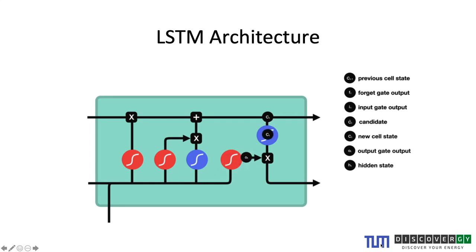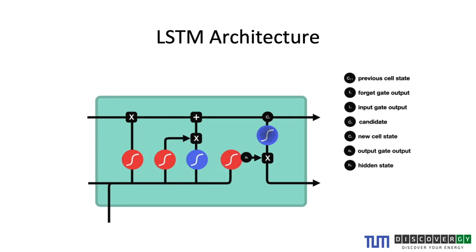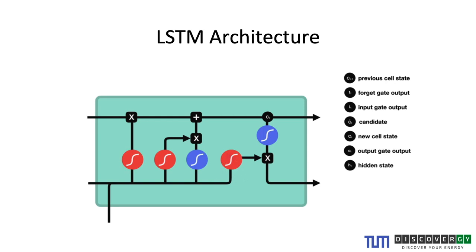Recurrent neural networks in the vanilla sense have the problem of exploding and vanishing gradients, which is why LSTMs were introduced. LSTMs use gated structures to cope with this problem. In the diagram, the three red circles with sigmoid signals are three gates. The first is the forget gate, which tells the cell how much previous information to forget — sigmoid transforms values from zero to one, where zero means forget all previous data and one means keep all of it.